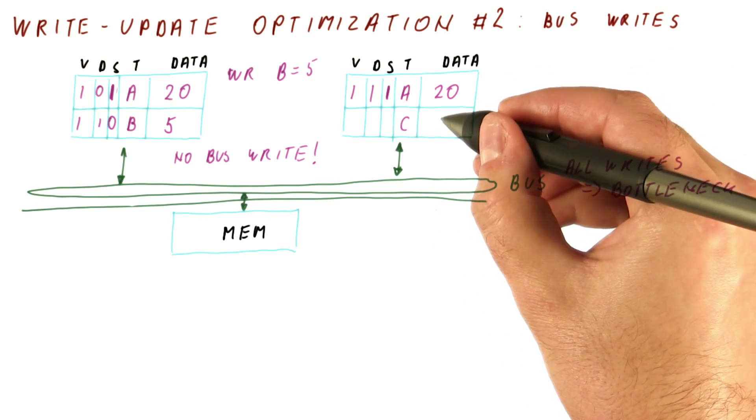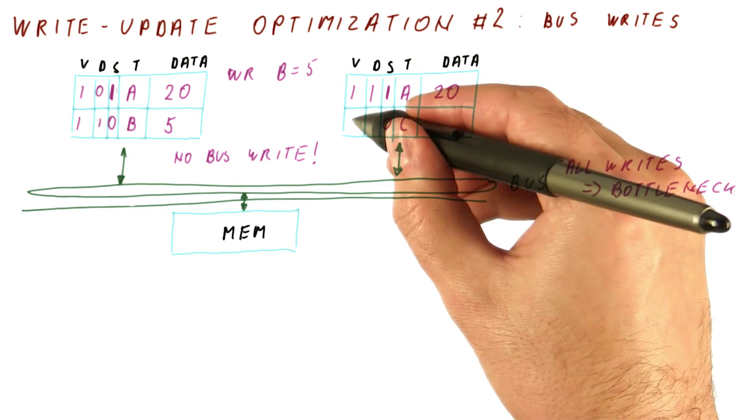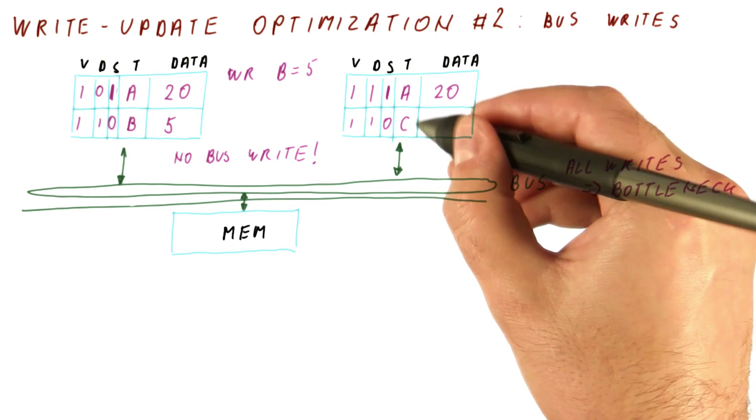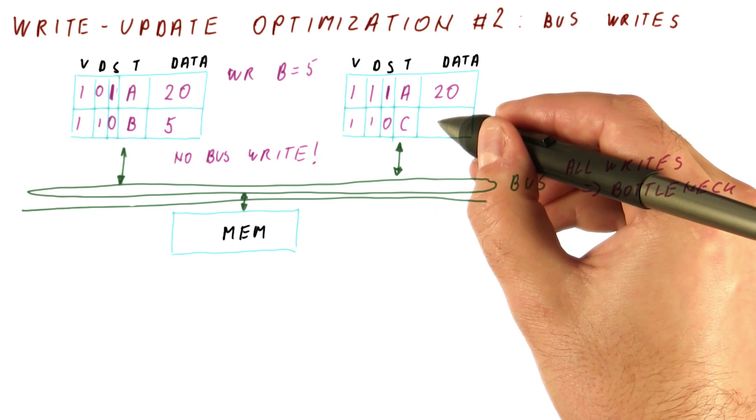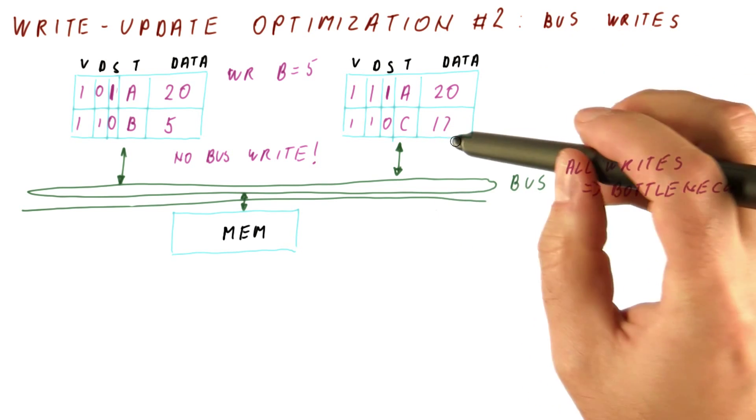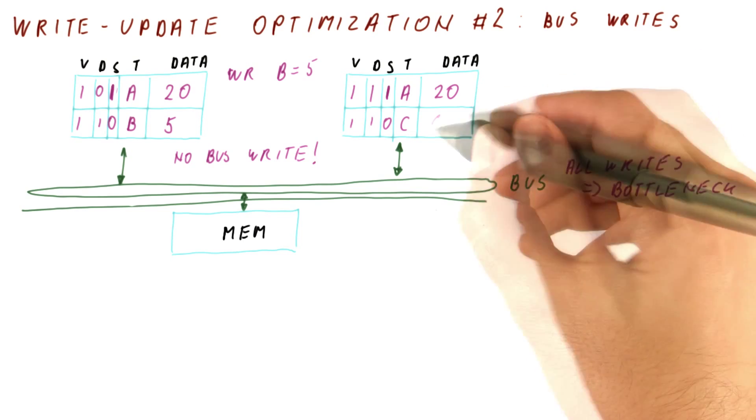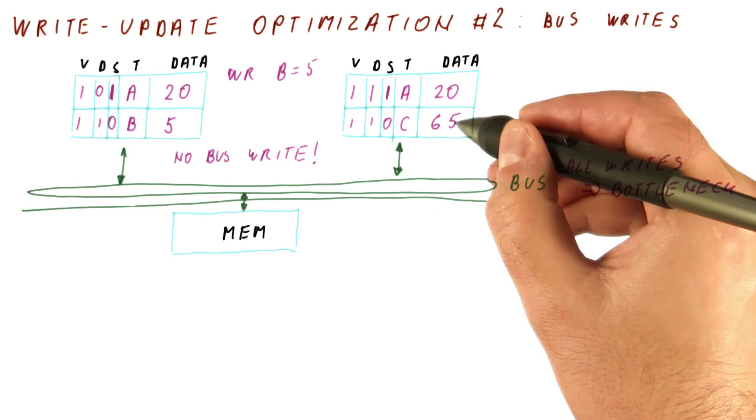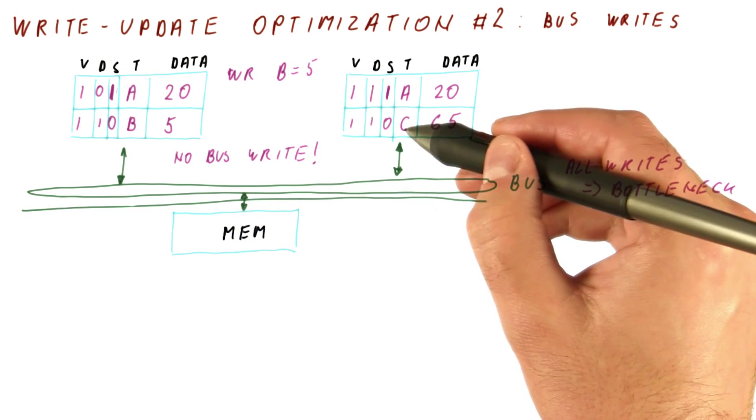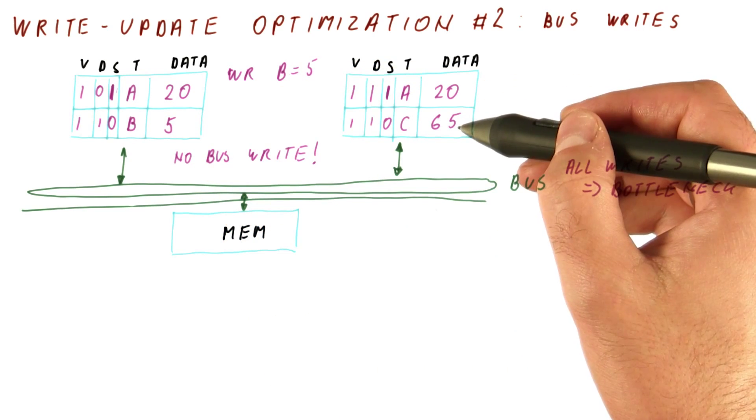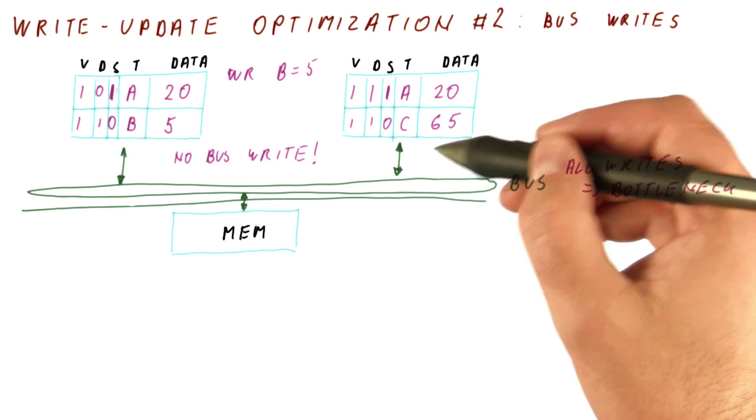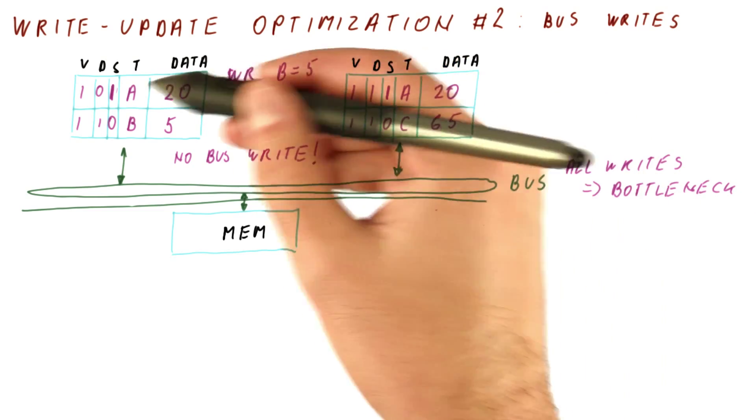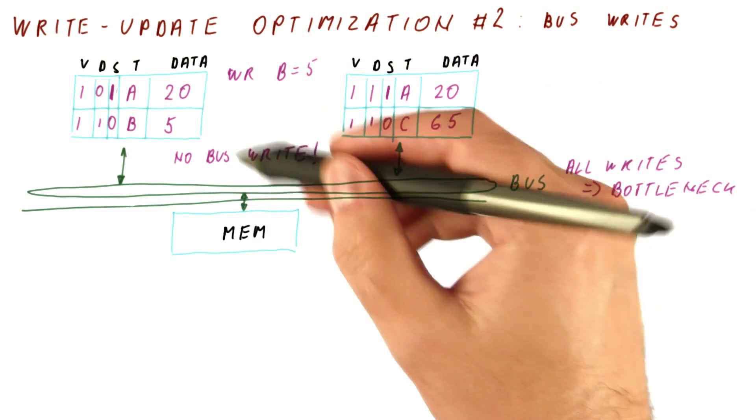Meanwhile, this core could be having in a non-shared state, for example, block C, and it can write anything it wants there. It can write 17, then 65, et cetera. So B and C, because they belong to only one core at this time, will not do bus writes, while A will do bus writes.